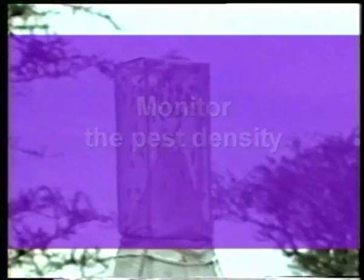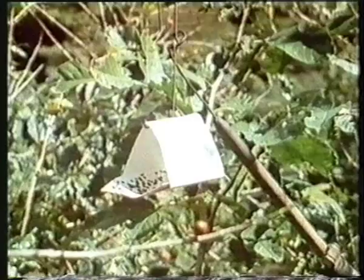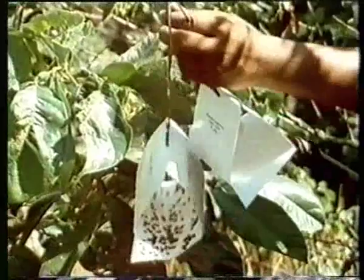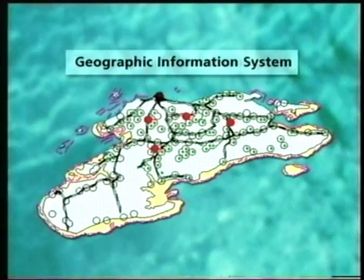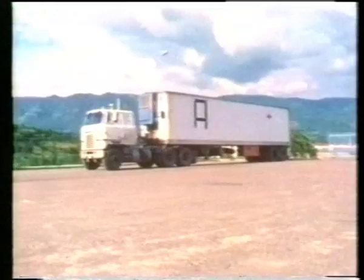Monitor the pest density, seasonal fluctuation, population structure, natural rate of increase, distribution, dispersal behavior, and reproductive interaction with neighboring populations. A geographic information system helps to identify pest infestations in commercial and non-commercial areas, and predict which areas have the potential for pest population increase.